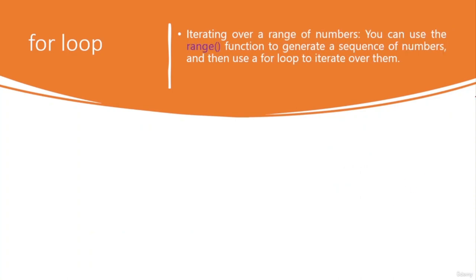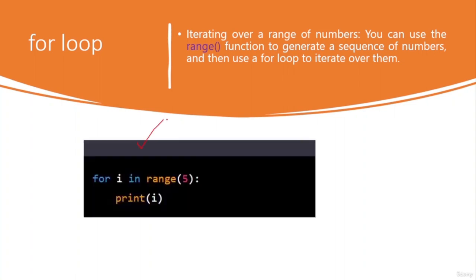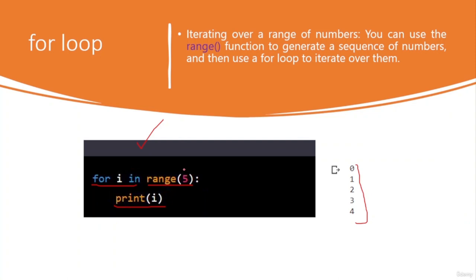You can use the for loop to iterate over a range of numbers using the 'range()' function to generate a sequence. For example, 'for i in range(5): print(i)' — the range function returns numbers from 0 to 4, so the output shows numbers from 0 to 4. Because range of 5 starts from 0 and ends at 4.